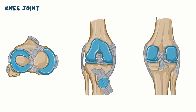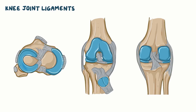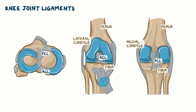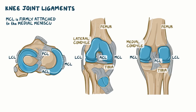The knee joint is supported by a number of ligaments. Within the joint space, there is the anterior cruciate ligament, or ACL, which runs from the anterior middle edge of the tibia to the lateral condyles of the femur, and the posterior cruciate ligament, or PCL, that runs from the middle posterior edge of the tibia to the medial condyle of the femur. Outside the joint space, there is one collateral ligament between the femur and the tibia on each side: the lateral collateral ligament, or LCL, and the medial collateral ligament, or MCL. The MCL is firmly attached to the medial meniscus, which makes it less mobile compared to the lateral meniscus.